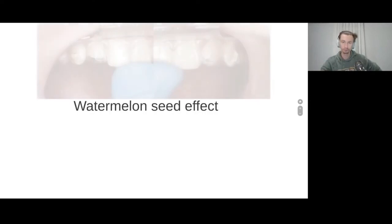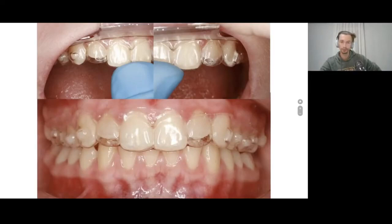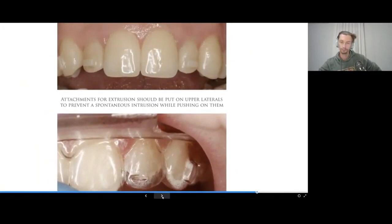Another mistake: if you push on a tooth with an aligner but there isn't enough space to displace the tooth because stripping wasn't performed, you get what's called the 'watermelon seed' effect. You push on the tooth but it has nowhere to go, so it intrudes — vertical displacement into intrusion. You can see here the aligners fit perfectly on each tooth, but the lateral incisors went into intrusion because stripping was not performed in time, creating a negative overload, and the teeth displaced vertically into intrusion. We have to create space for the inclination of the teeth.